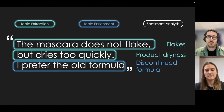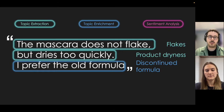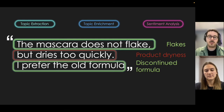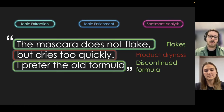When we have all those topics, we want to know if people speak about them in a positive or negative way. For that we have a third algorithm — sentiment analysis. 'The mascara does not flake' is pretty positive. 'Dries too quickly' is rather negative. And 'I prefer the old formula' — the model identified that as positive sentiment, even though for us at L'Oréal it might not be a good thing if people prefer the old formula.